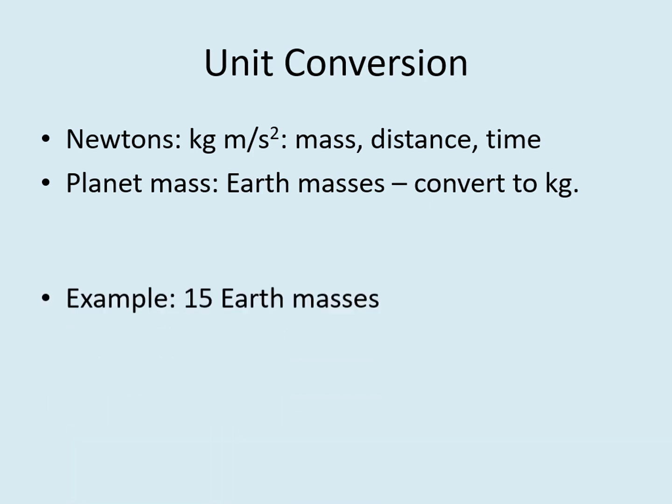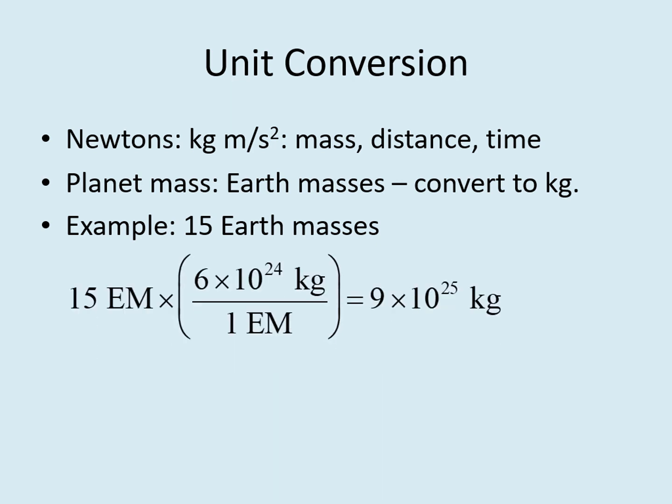Let's try this for the case of a planet with a mass of 15 Earth masses. When we look at the mystery solar system table, we see that one Earth mass is 6 times 10 to the 24th kilograms. So 15 Earth masses, times 6 times 10 to the 24th kilograms, divided by one Earth mass, gives 9 times 10 to the 25 kilograms. This planet is significantly larger than the Earth, so the number of kilograms should be more than the Earth's.